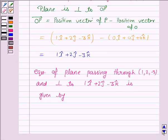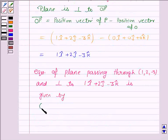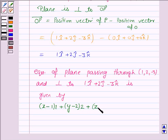using the key idea: (X - 1)(1) + (Y - 2)(2) + (Z - (-3))(-3) = 0